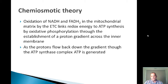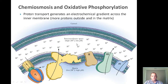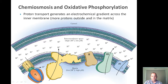As the protons flow down this gradient, it allows the ATP synthase, which is a protein complex, to actually generate ATP. Proton transport generates an electrochemical gradient across the inner membrane, which simply means that there are more protons on the outside than the inside of the matrix. Looking at the mitochondria, we have our four electron transport chain complexes, and at complex 1, complex 3, and complex 4, we have transfer of protons from the matrix side into the intermembrane space, creating a gradient.